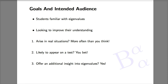You know, the one that involves subtracting lambda from the diagonal, calculating the determinant, solving the characteristic polynomial, and then for each eigenvalue using Gaussian elimination to bring the matrix to row reduced echelon form in order to determine the eigenvectors.